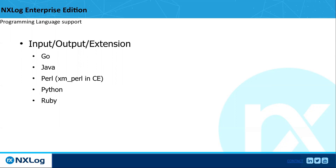EE supports multiple programming languages, so if the default modules don't work for your need, you can build something yourself using Go, Java, Perl, Python, or Ruby to create an input, output, or extension module. For example, we recently processed EVTX files on a Linux box — the customer needed to process them on Linux, so we used IM Python with a public library to pull in EVTX events. Note that XM Perl is still included in CE, but the other language modules are EE only.